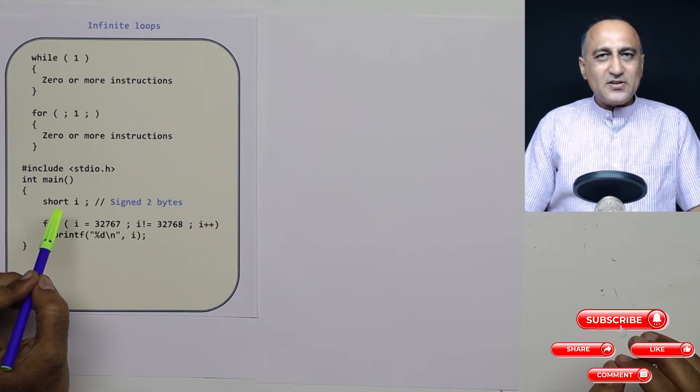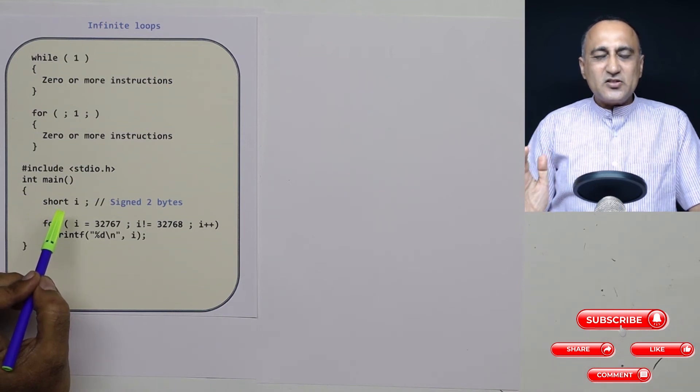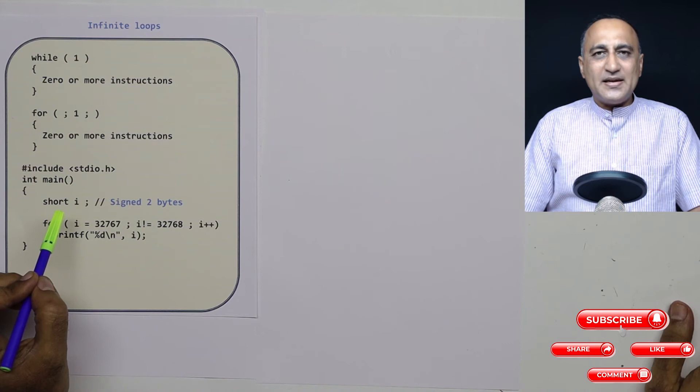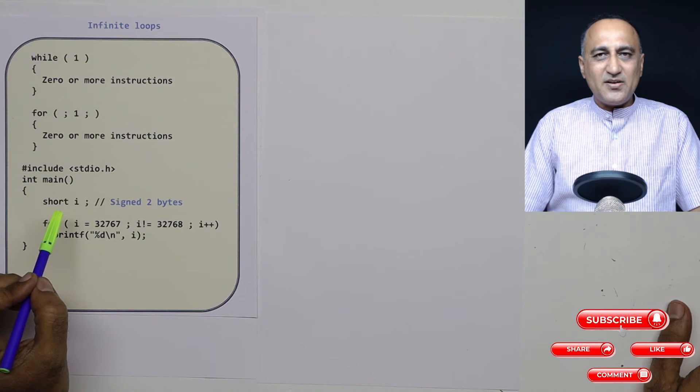So assuming size of the short int i is just two bytes, the signed int is going to have a range from minus 32,768 to plus 32,767 with one bit for the sign bit.